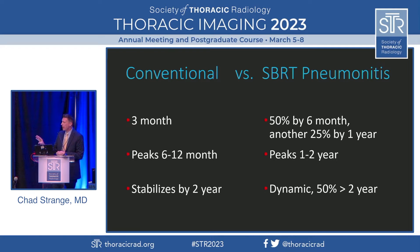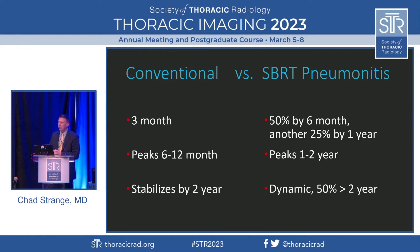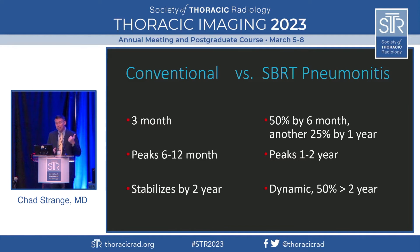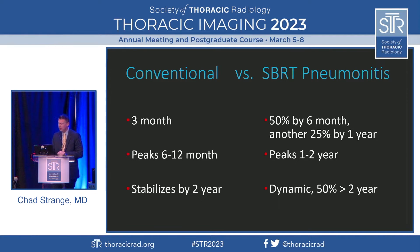With any of the newer modalities — and I'm using SBRT as the example, but this is really true for any of the newer modalities — the radiation pneumonitis, when it shows up, is more variable. Fifty percent of patients will have radiation pneumonitis changes by six months, with another 25% developing by a year. It peaks later at one to two years, and in 50% of patients, even beyond two years, there can be further evolution of the radiation changes. You need to know what they got, because if it's one of these newer modalities, there's a lot of variability of when it shows up, how it develops, and how long it can keep evolving.